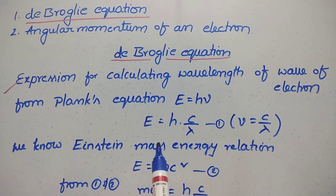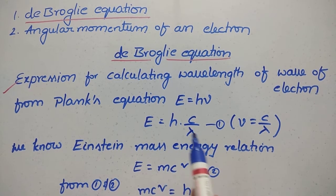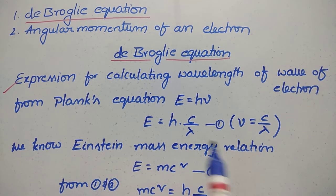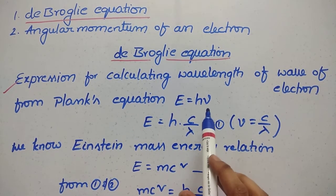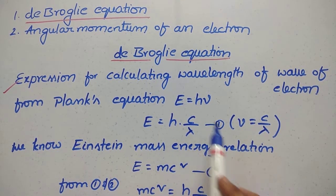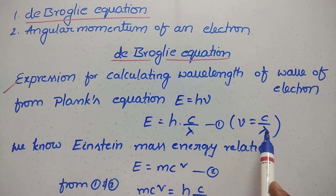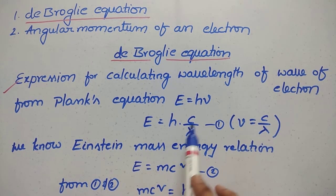From the Planck equation, we know that E equal to h nu. Here, nu is frequency. So nu equal to c by lambda, which gives us E equal to h into c by lambda.